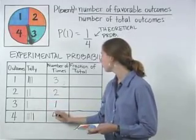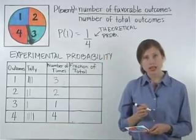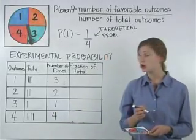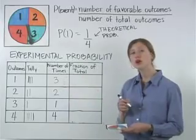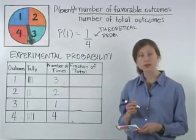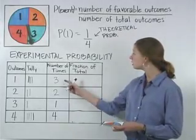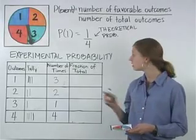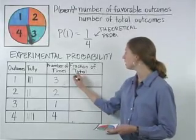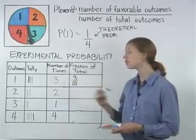Now, to find the fraction of total, we write the number of times over the total number of times that we spun the spinner. Since we spun the spinner ten times, the fraction of total for one is three out of ten. The fraction of total for two is two out of ten.